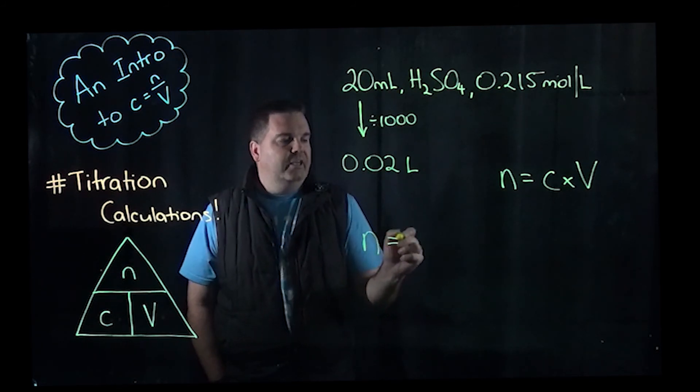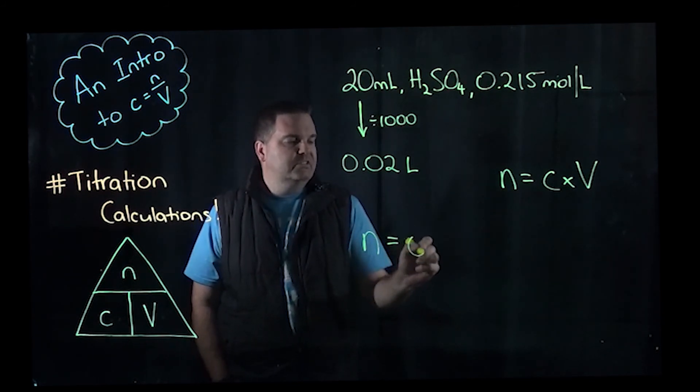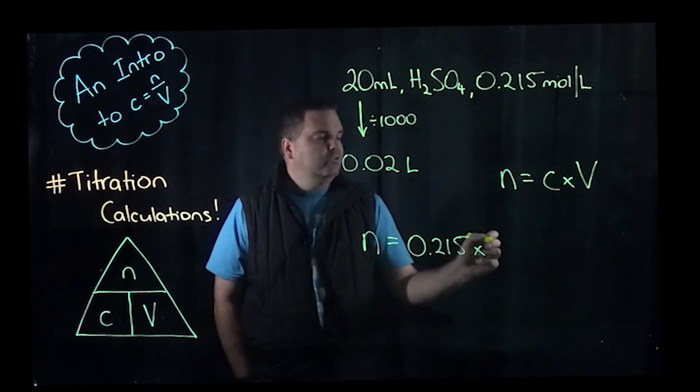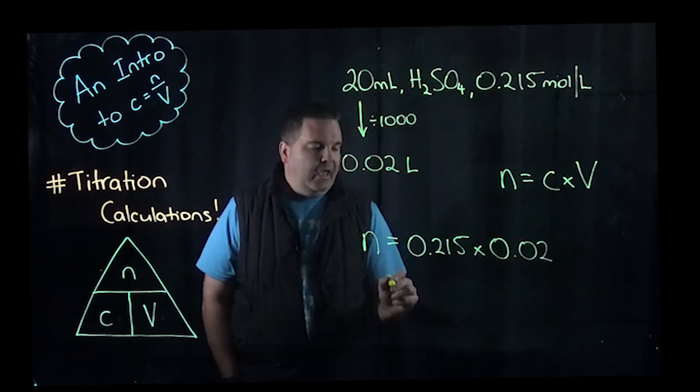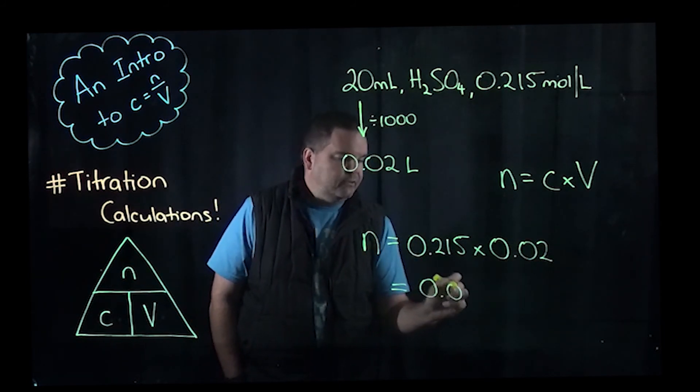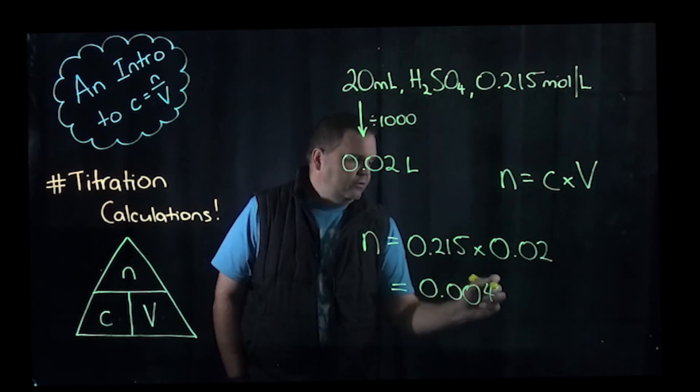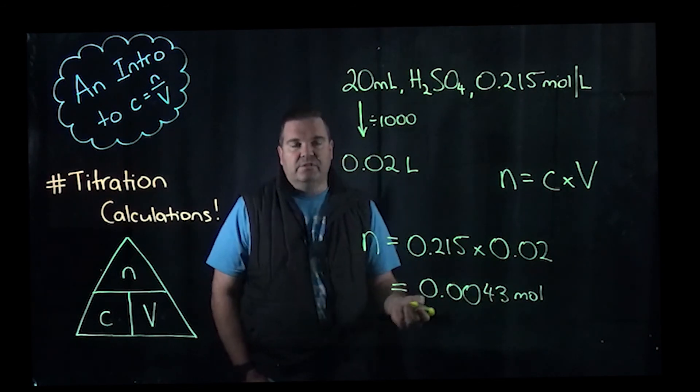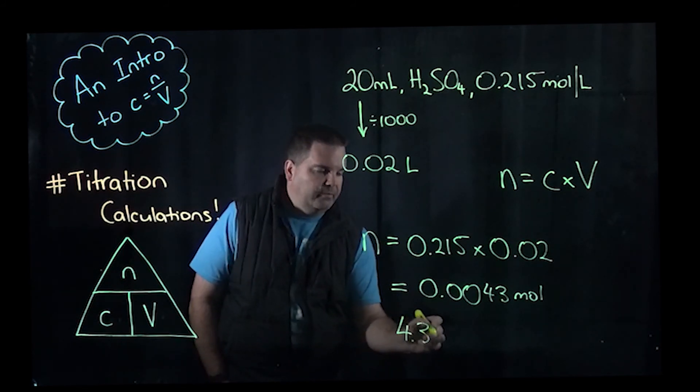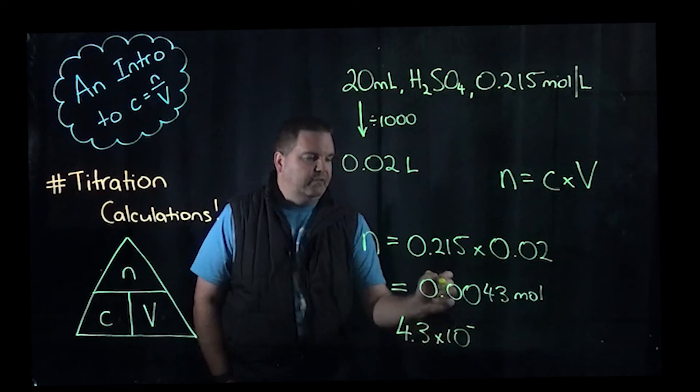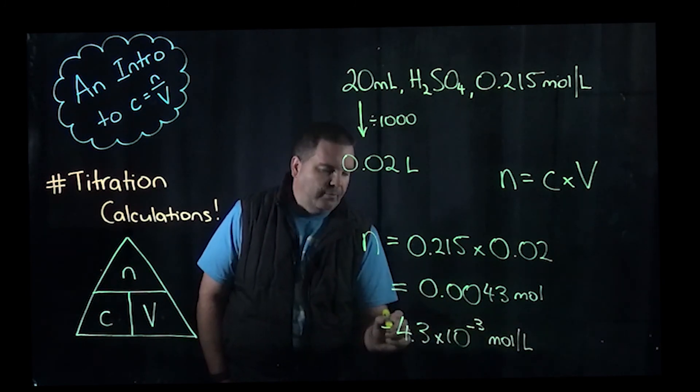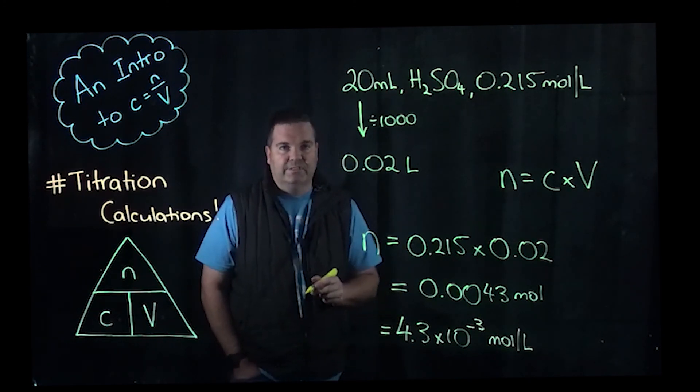So number of moles equals concentration, which is 0.215 times by volume, which is 0.02. And you can end up with a value of 0.0043 moles. Or because we like to use scientific notation in chemistry, we would convert that into 4.3 × 10^-3 moles per litre. I'm hoping that pen isn't too squeaky for you. If it is, I do apologise.